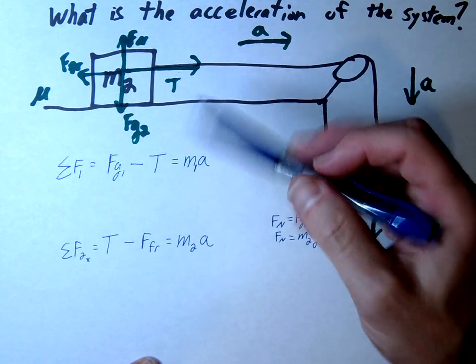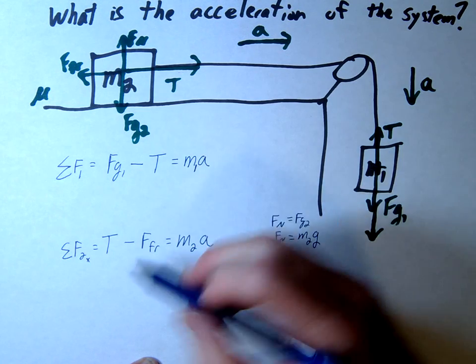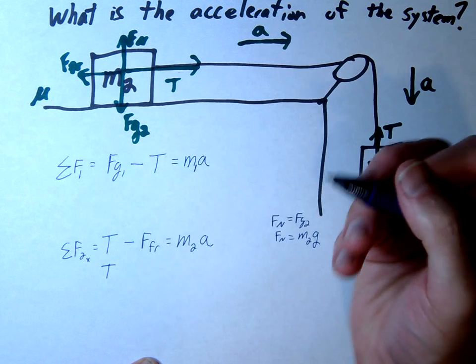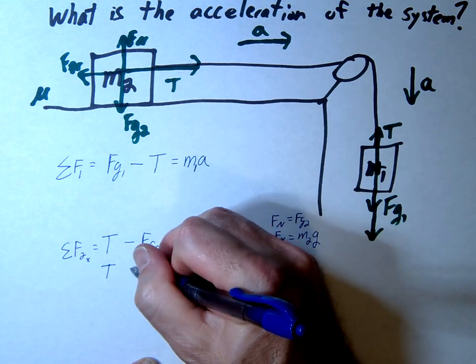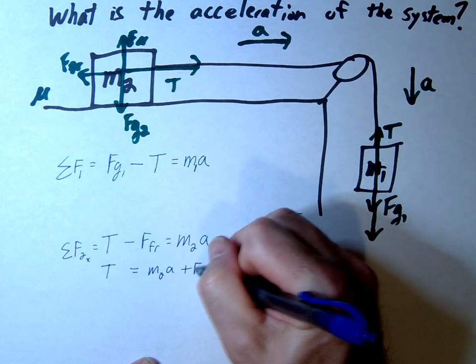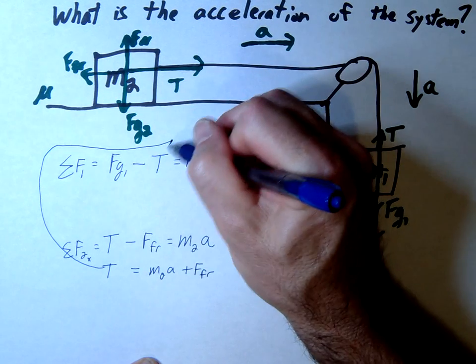Now we'll start solving. Since we have acceleration on both sides, I'll solve for tension from the second equation. Tension equals m2a plus friction. Then we'll substitute this expression into the first equation.